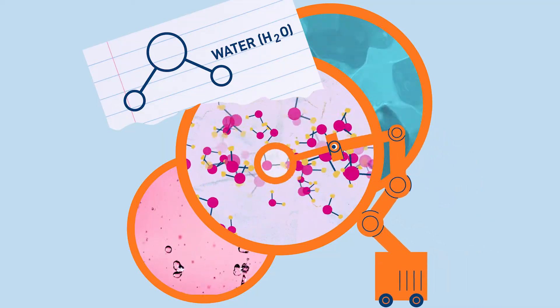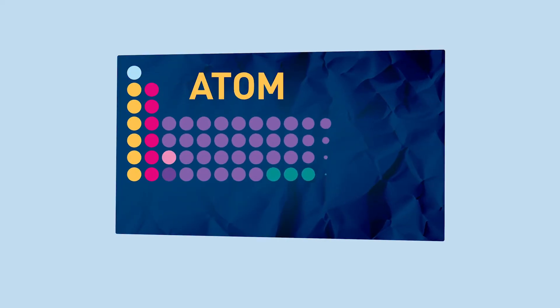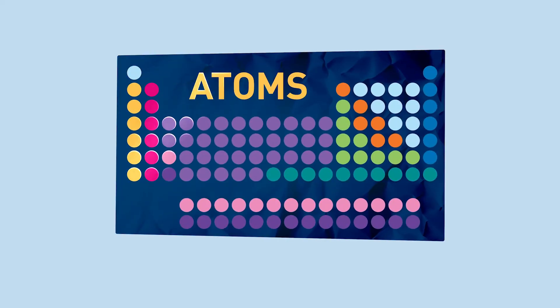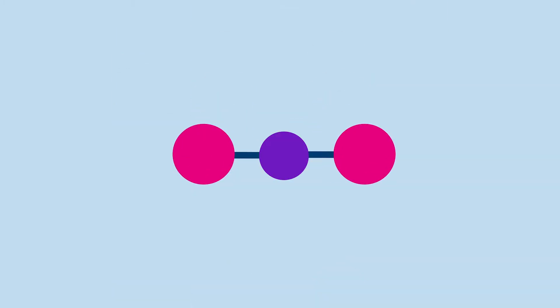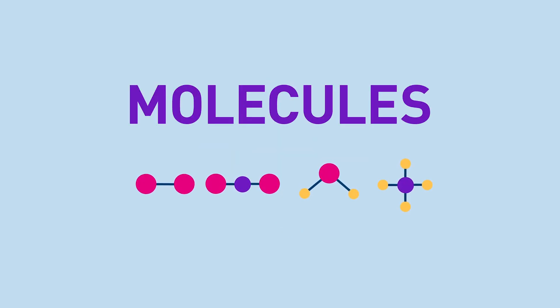To understand molecules, we first need to zoom in even further to see atoms. Atoms are the building blocks of molecules. There are around a hundred different types of atoms, and they can bond with each other in many different combinations. These combinations are molecules, and there are many different molecules that can form in nature.